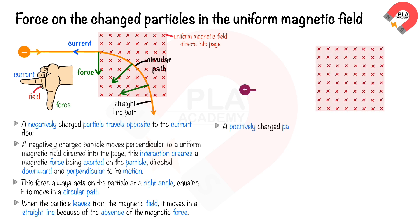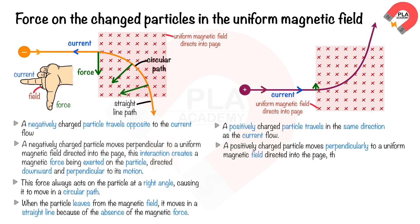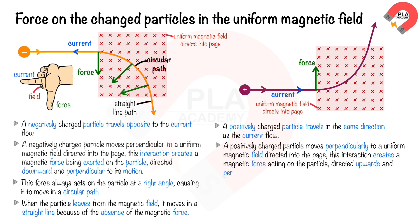When a positively charged particle travels in the same direction as the current flow, it also interacts perpendicularly with a uniform magnetic field directed into the page. This interaction creates a magnetic force acting on the particle, directed upwards and perpendicular to its motion.